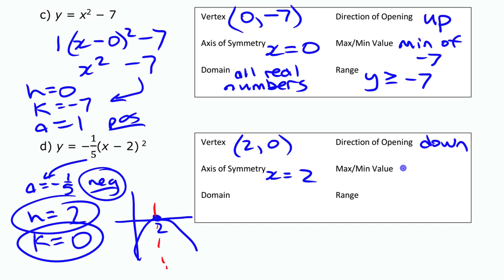This one, since it opens down from 0, has a maximum of 0. The domain again, same thing. And the range, the other way of saying this, is saying that all the y values have to be less than or equal to 0.